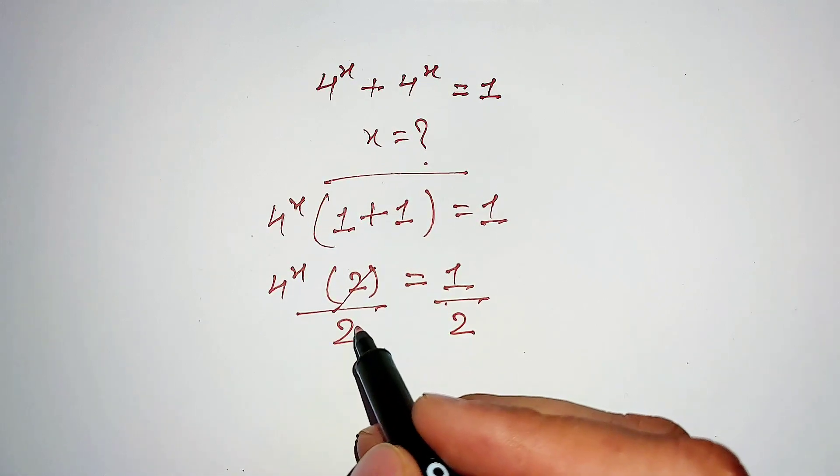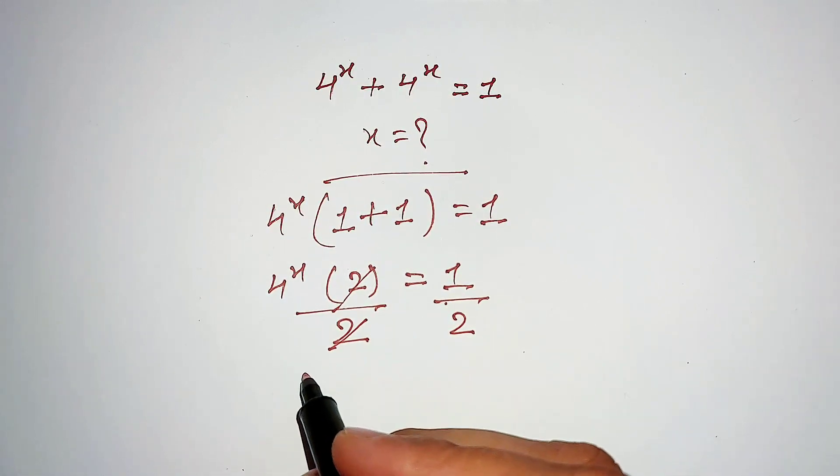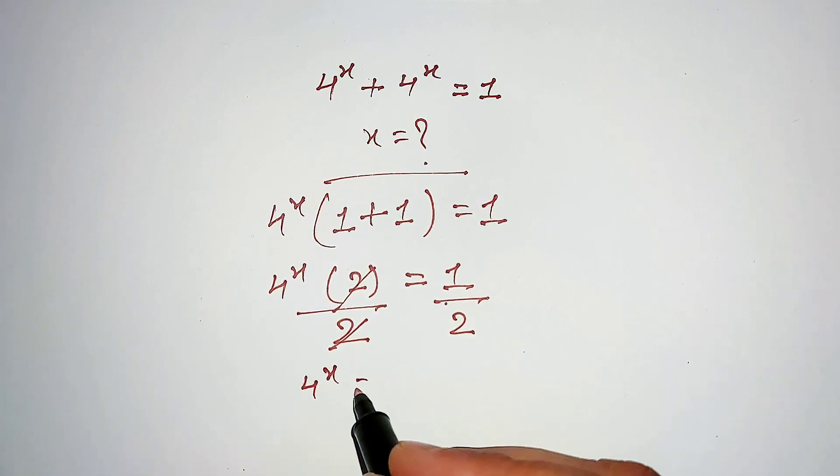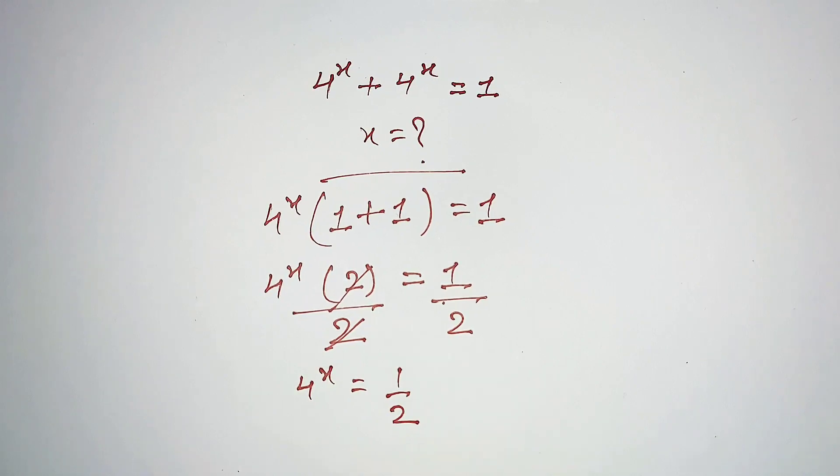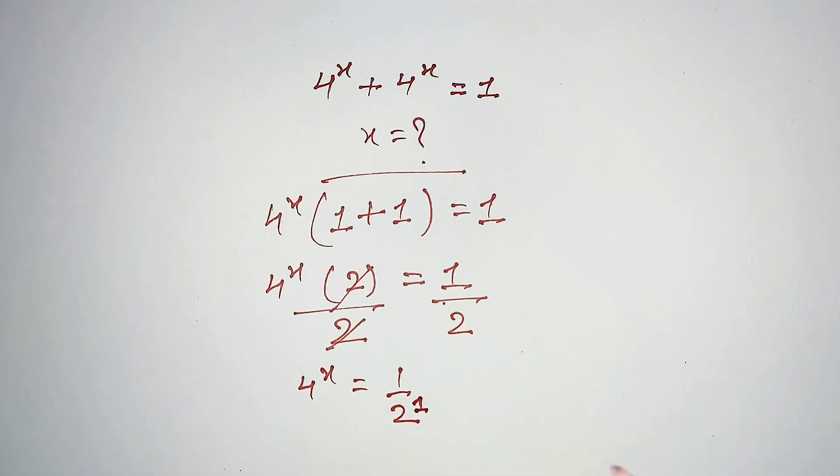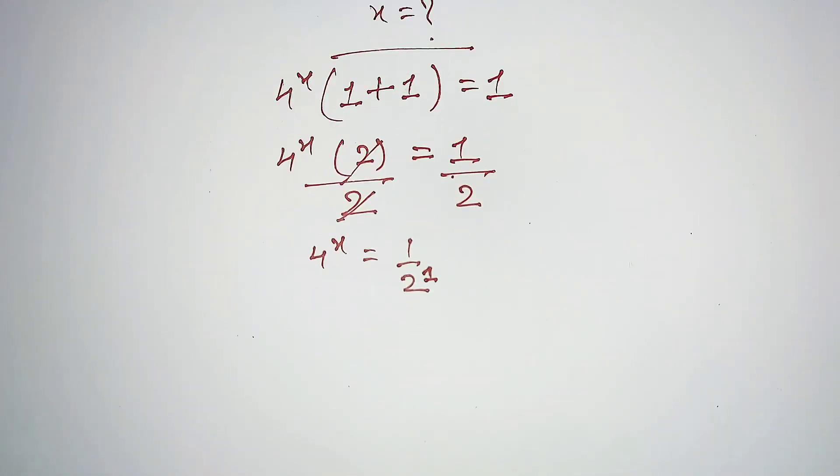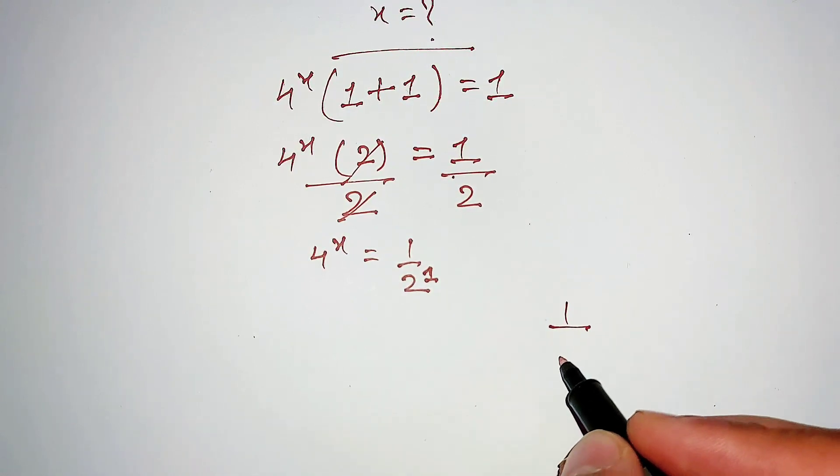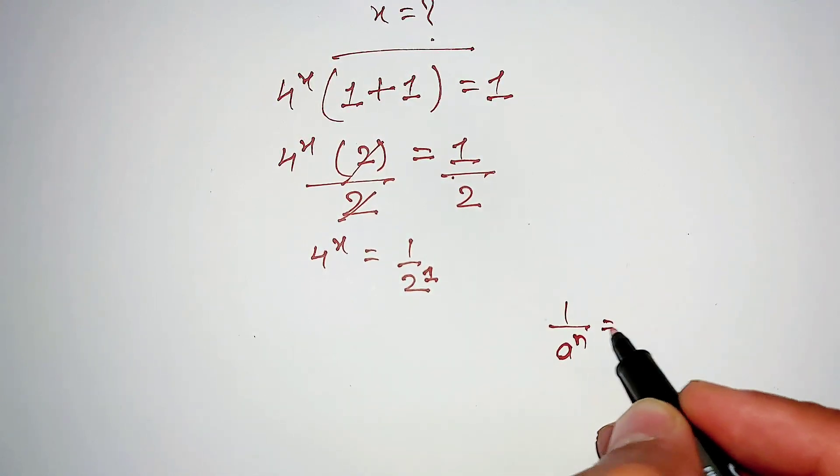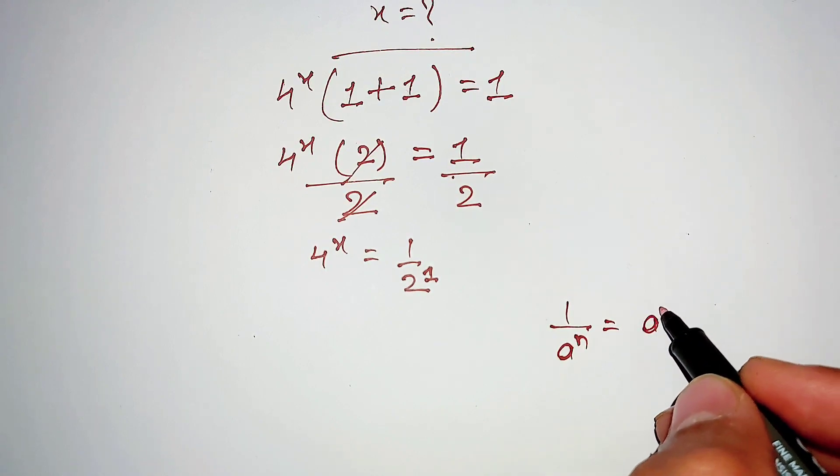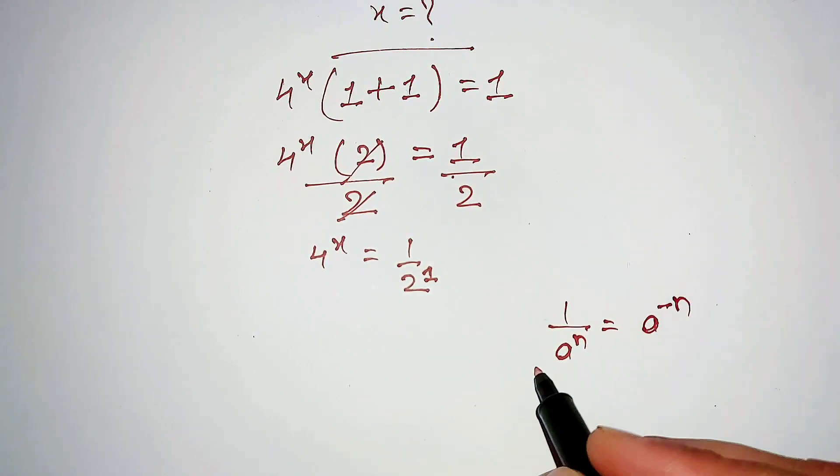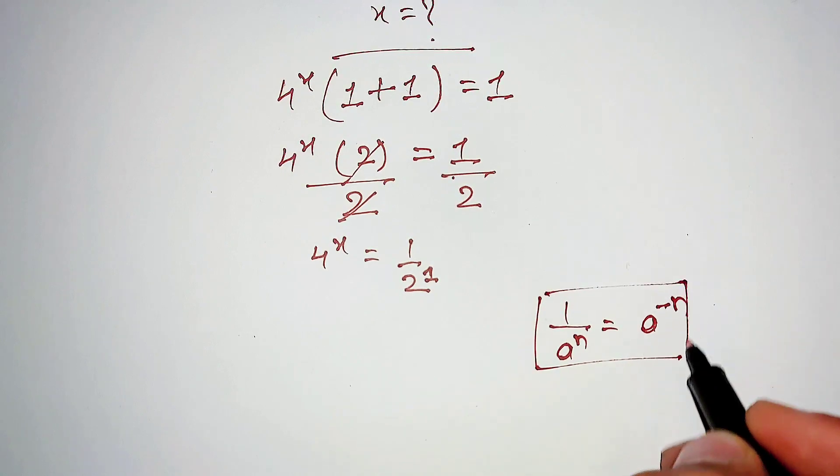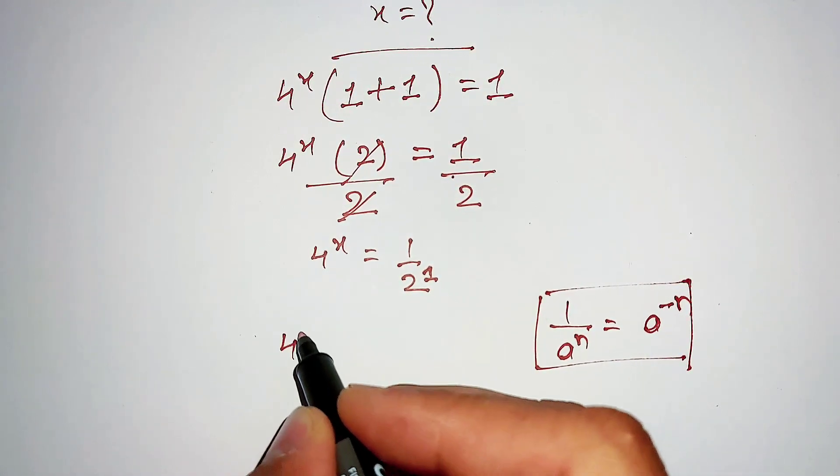This 2 will cancel out this 2 and our equation will look like 4^x equals 1/2. Now this 2 is same as 2^1. Here we are using this exponential property: 1 over a^n is same as a^(-n). We are using this property here: 4^x equals 2^(-1).